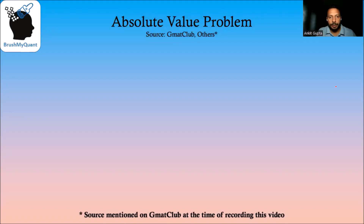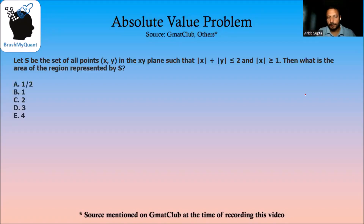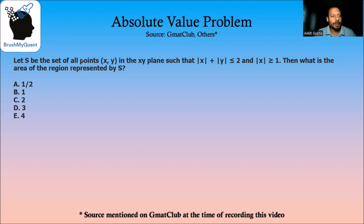Hi, we'll be solving an absolute value problem today. So let S be the set of all points x, y in the x, y plane such that |x| + |y| ≤ 2 and |x| ≥ 1. Then what is the area of the region represented by S?